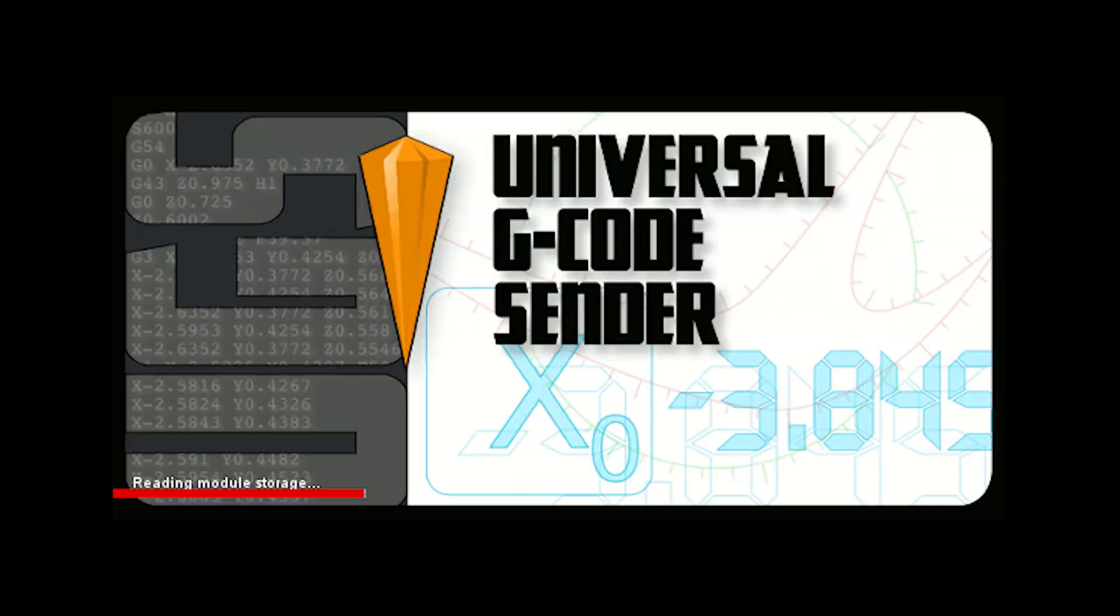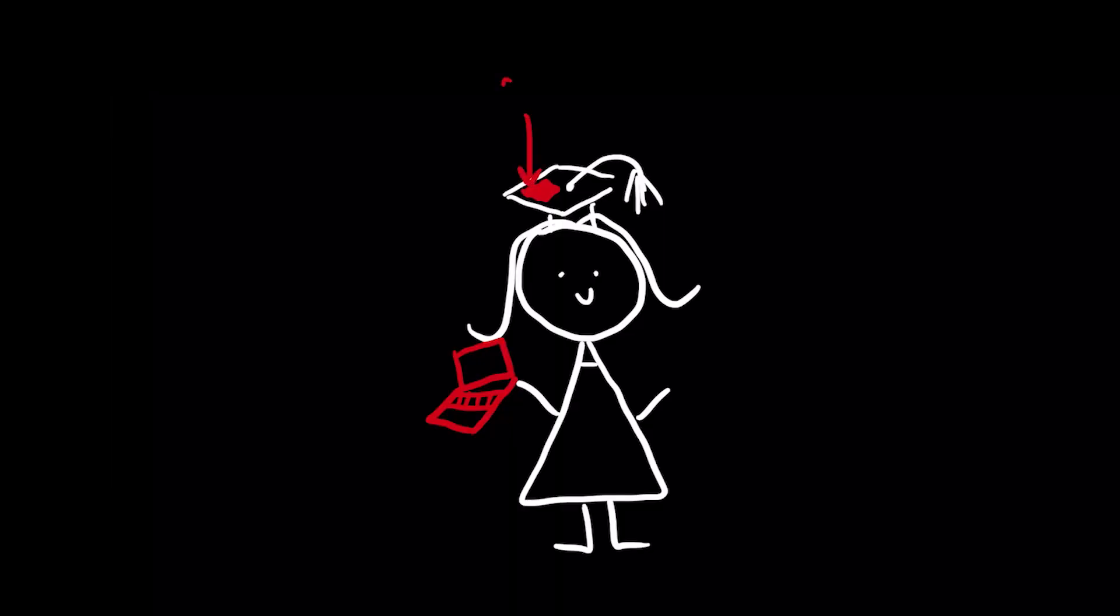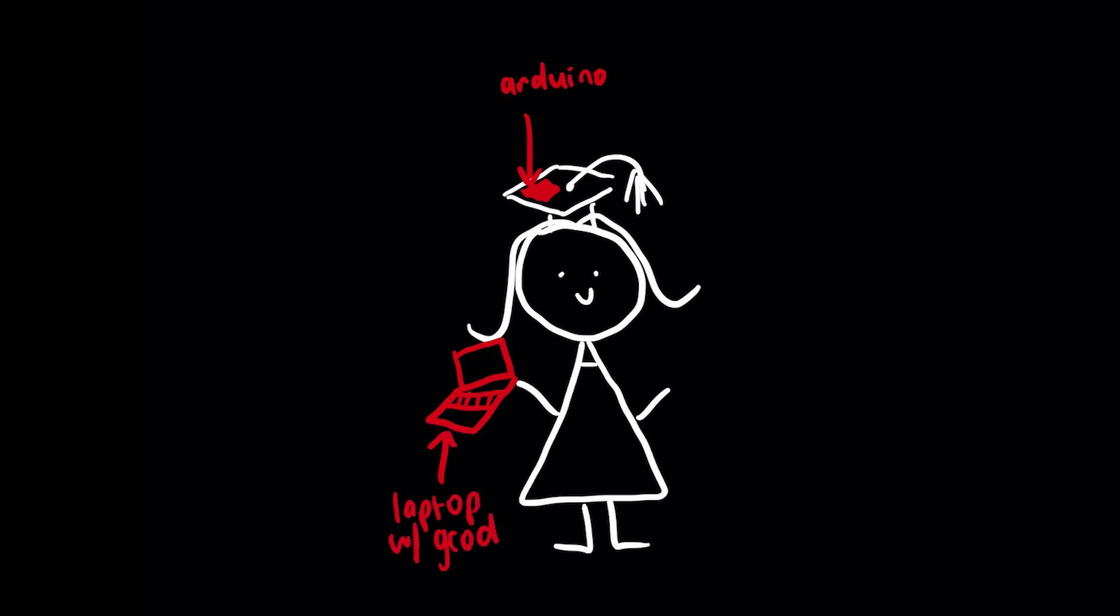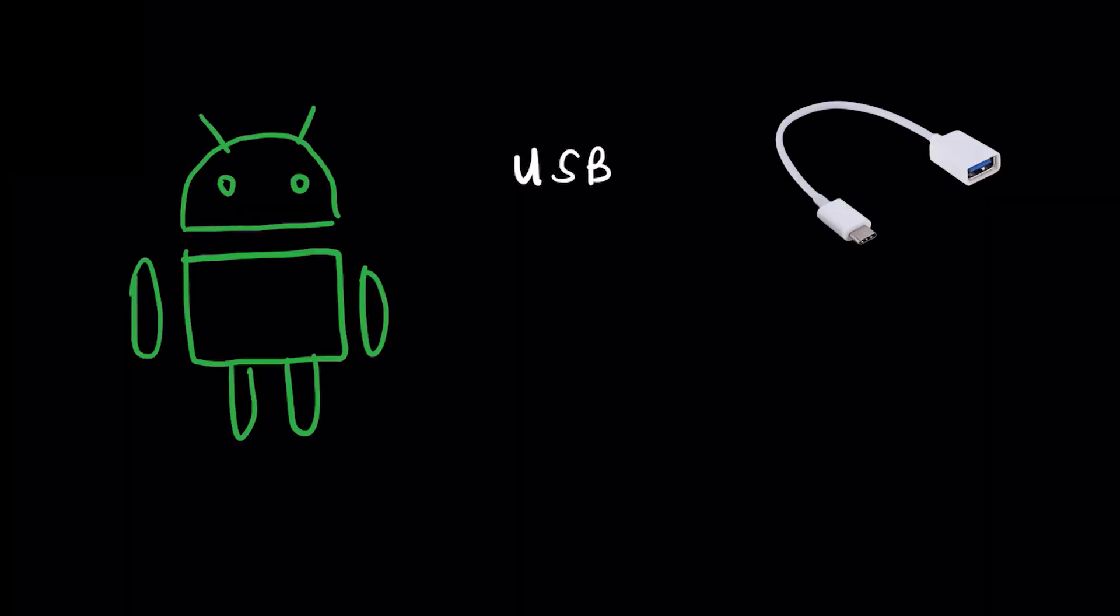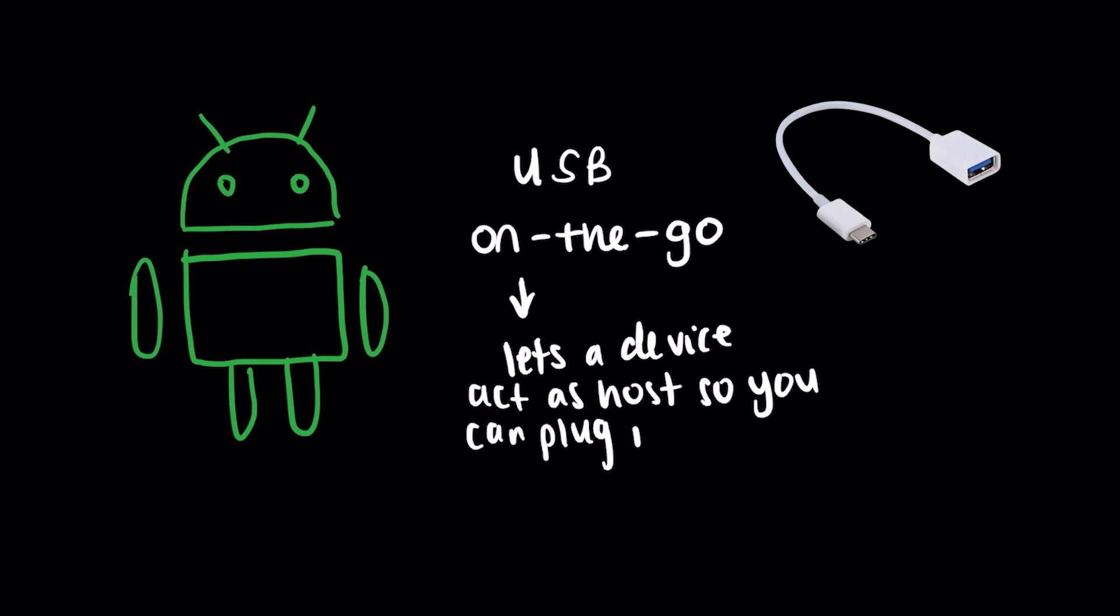And remember the gcode sender? Yeah, I think I would have needed to carry around my laptop to actually send the gcode to the Arduino and have it run. The sender sends it line by line, so the Arduino would need to stay connected to the laptop, not only for serial communication but for power as well from the USB port. I could have reconfigured my old Android phone or tablet to do this, but I didn't have a USB on-the-go device, nor the means to make one in the moment.